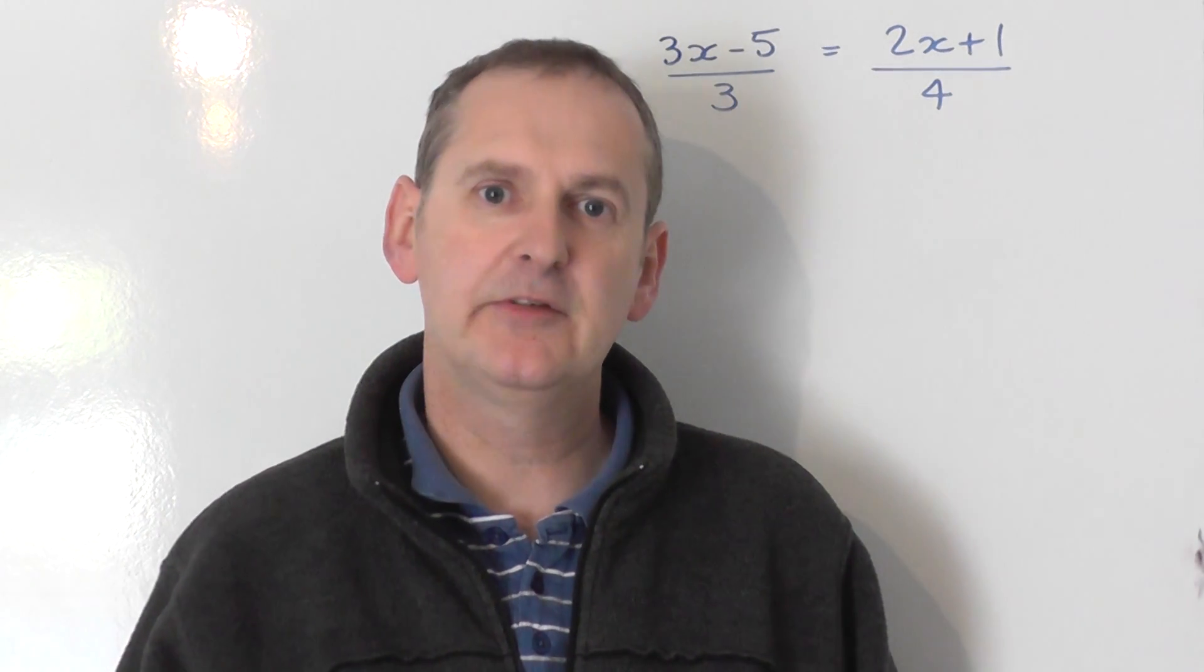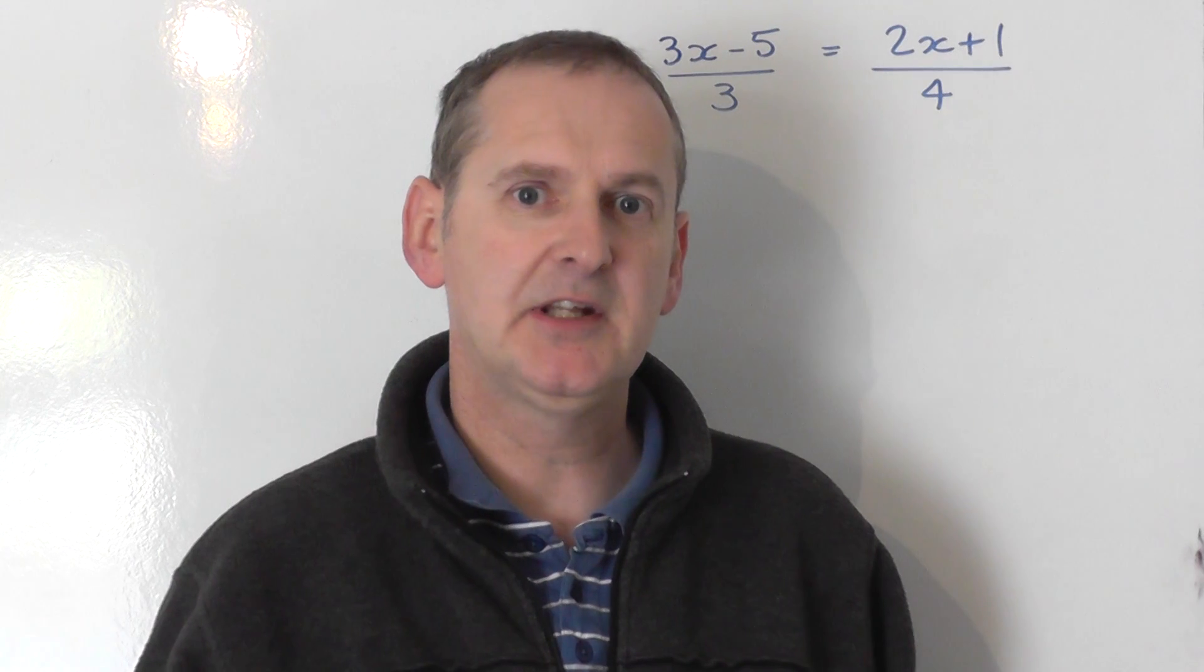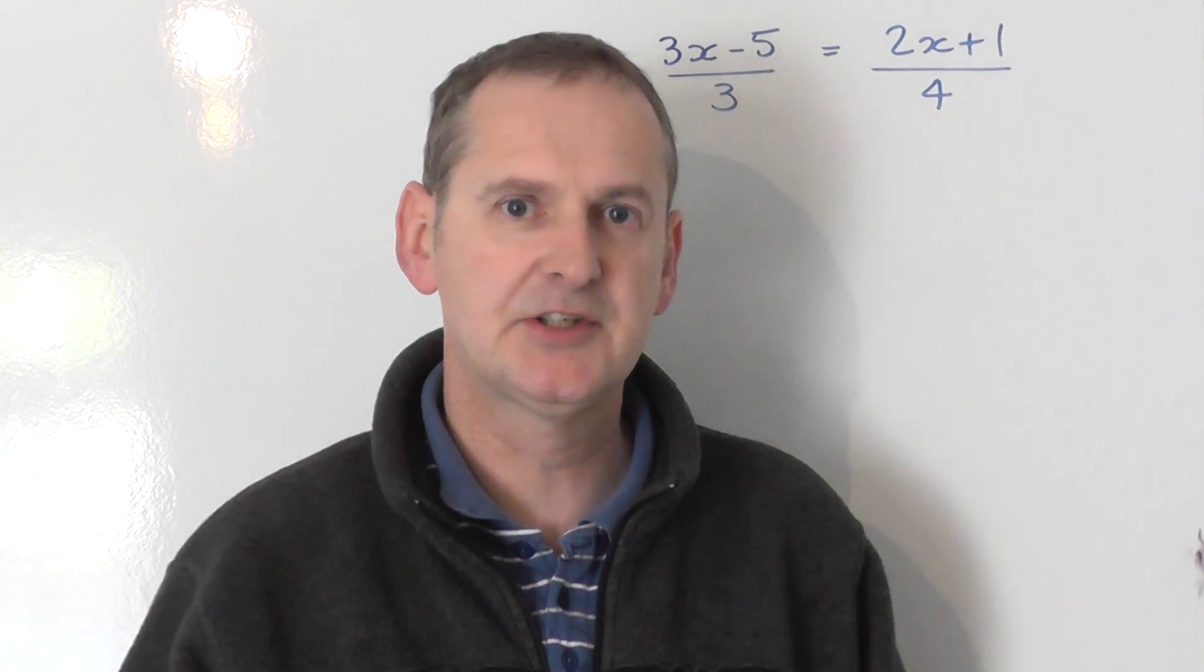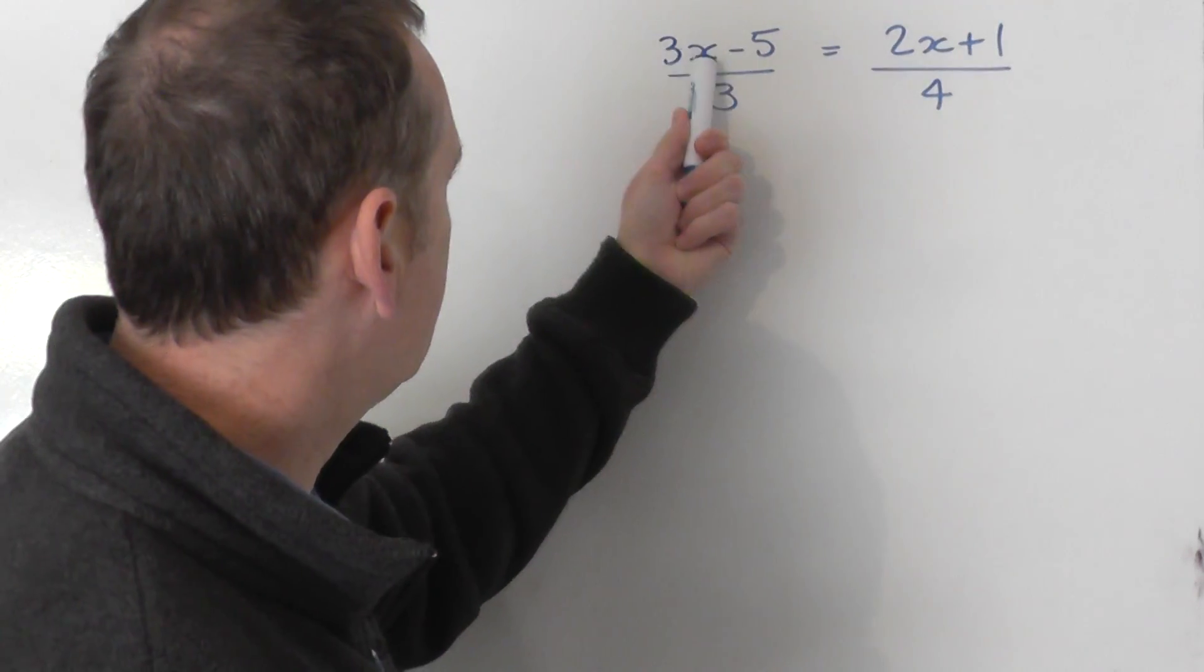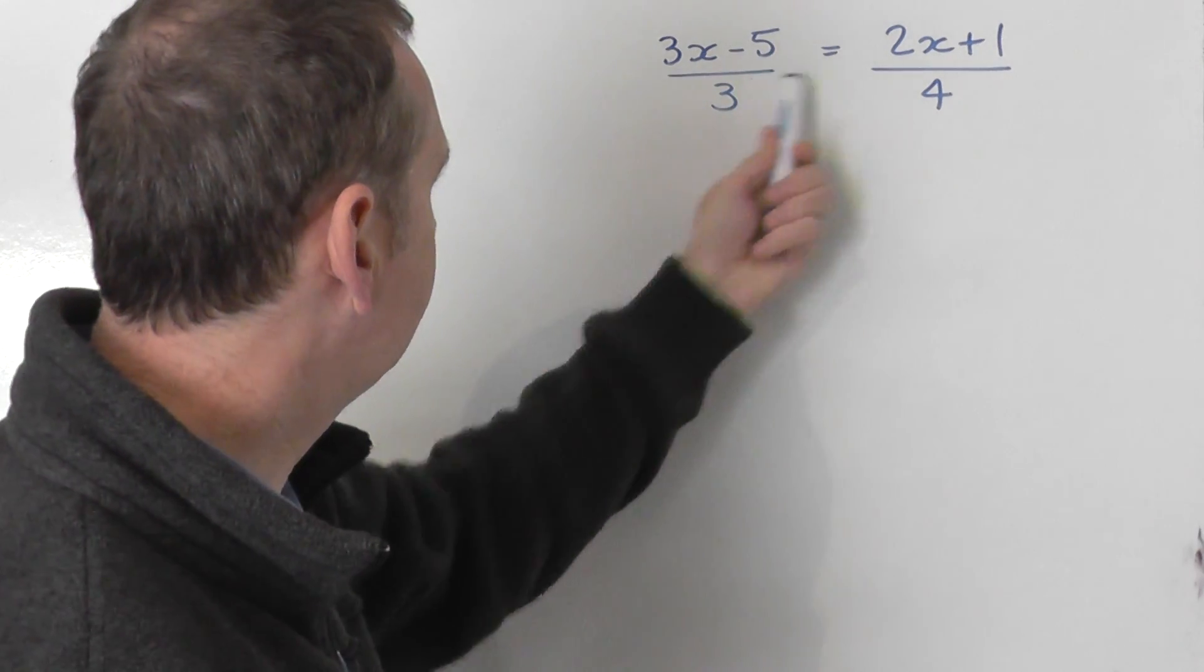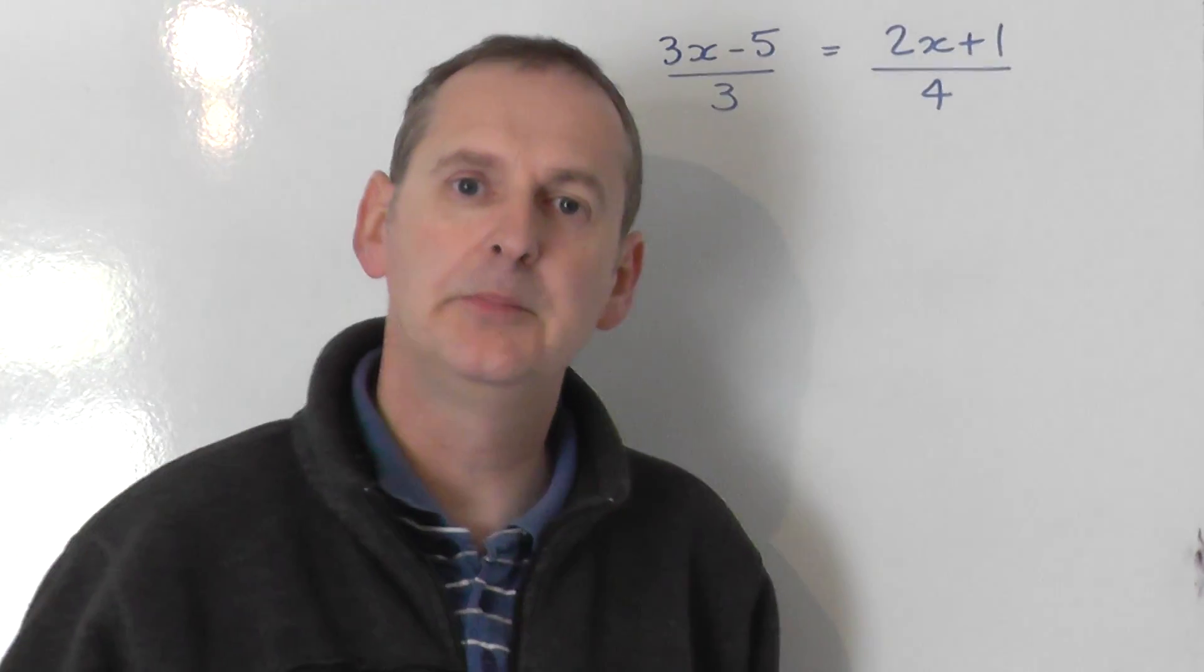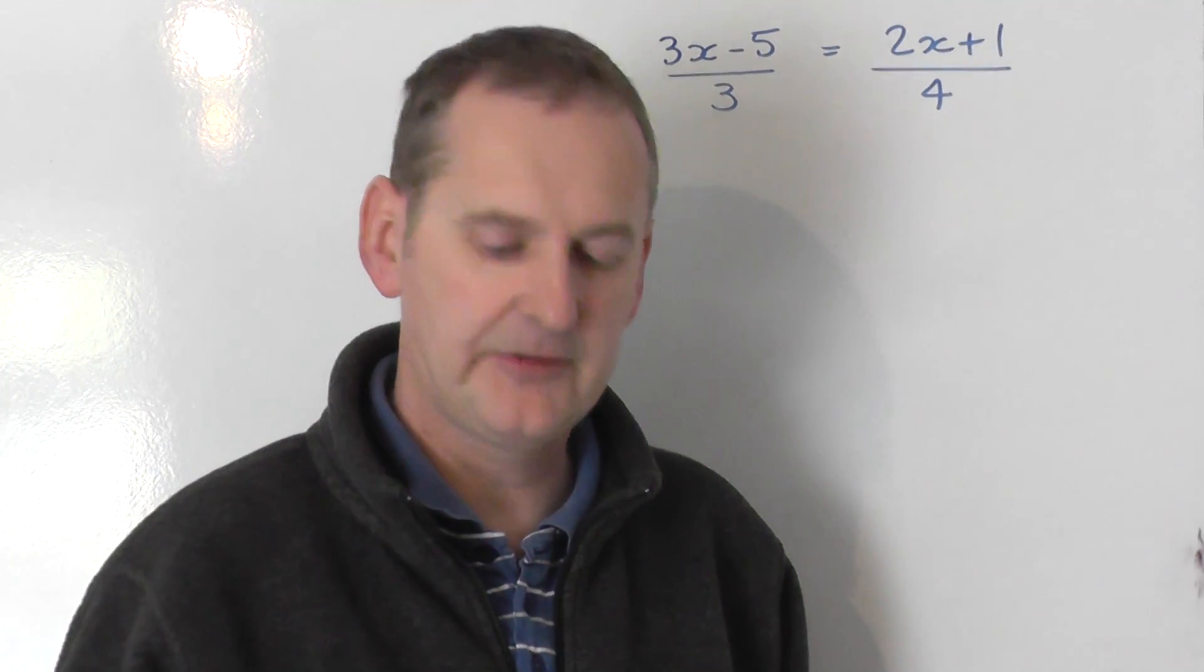This equation involves fractions, obviously you can see them, but it also involves brackets. Because the left hand side is 3x minus 5 all divided by 3, there's one long big line dividing the whole thing. So I'm going to get color out and insert that bracket in.